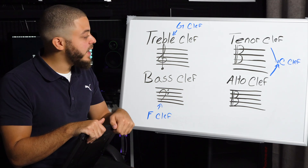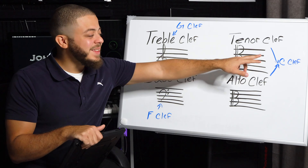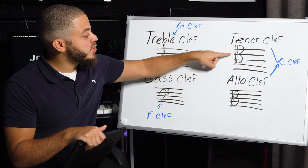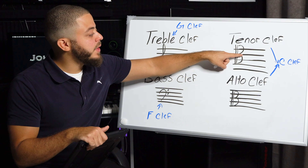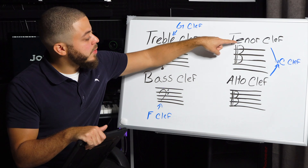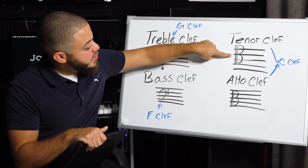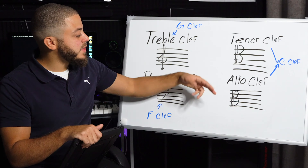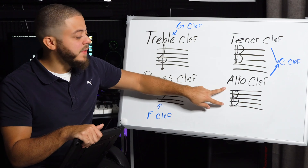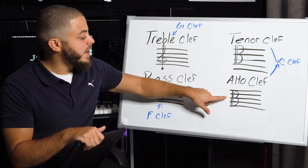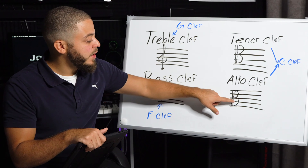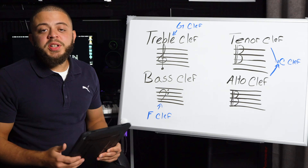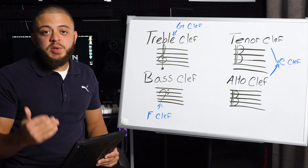Then we have our tenor clef, which is also called the C clef because middle C, or the note C, is right in the middle of this line here — this is where middle C would be. And then in the alto clef, it's exactly the same, but instead of being displaced on the staff, it's actually centered on the staff. Middle C is where this little three symbol meets in the middle line. Next, we're going to talk about the list of instruments that use each clef.